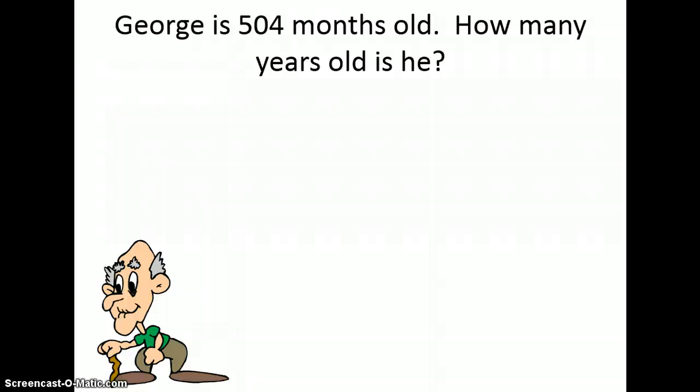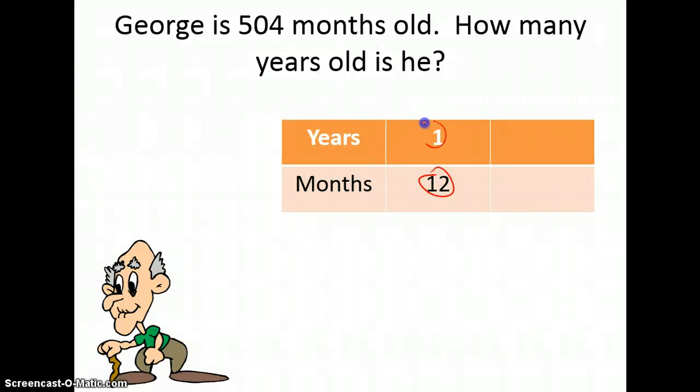Let's look at one last problem. George is 504 months old. How many years old is he? Well, in order to solve this problem, I need to know a unit conversion. What conversion do I need to know? If I'm told that George is 504 months old, and I'm trying to figure out how many years old he is, there are my two units: months and years. So I need to know that there are 12 months in one year. Now, in the problem, I was also given the number of months old that George is: 504. So I'm going to put that in my table in the months row.